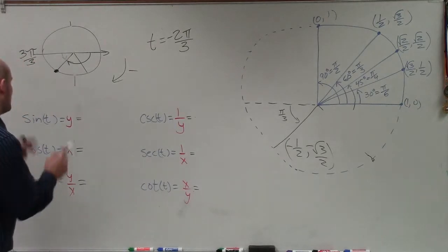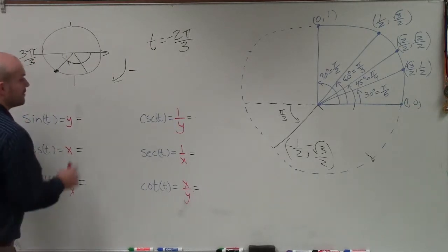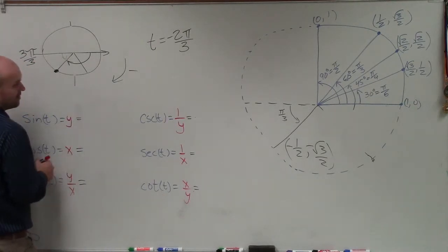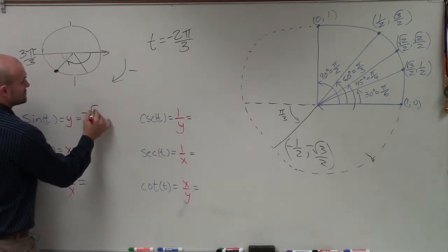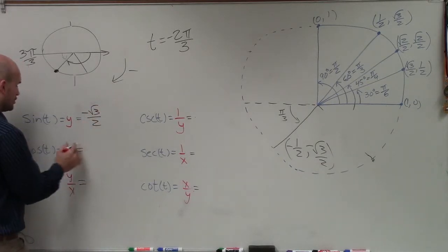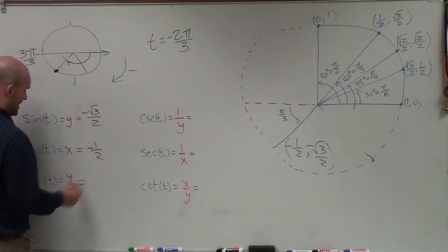And if I'm going to evaluate for the sine, we just want to be concerned about the y value, which is going to be negative square root of 3 over 2. The cosine represents the x, which is just going to represent negative 1 half.